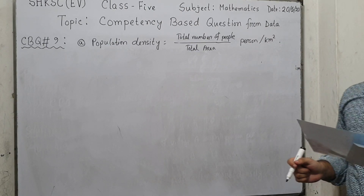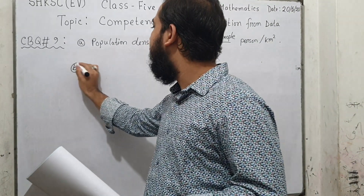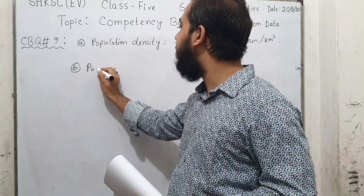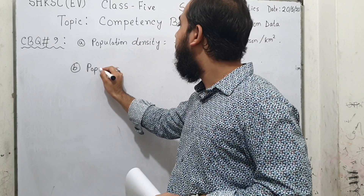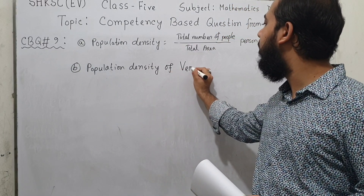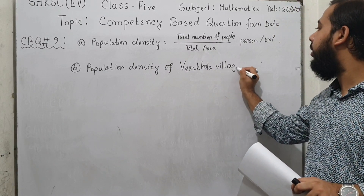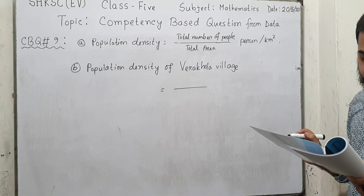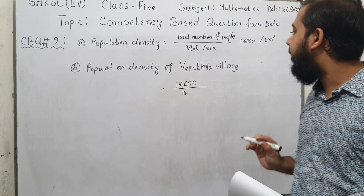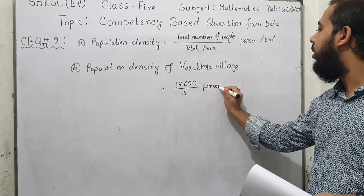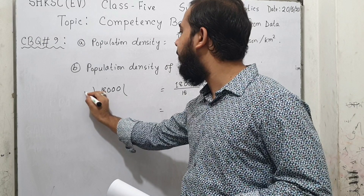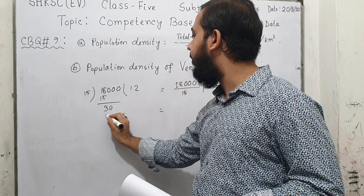Question 9B asks: what is the population density of Belakhola village? Since we already wrote the formula in part A, we write: population density of Belakhola village equals 18,000 divided by 15 square kilometers, which gives us the answer in persons per square kilometer.